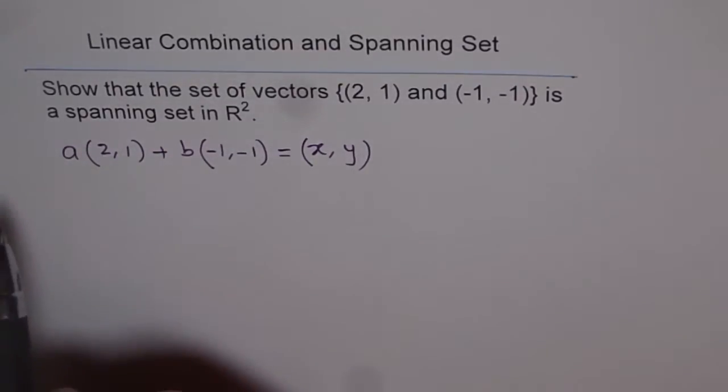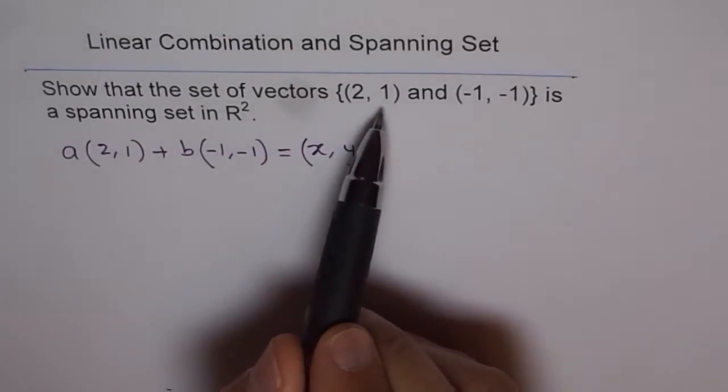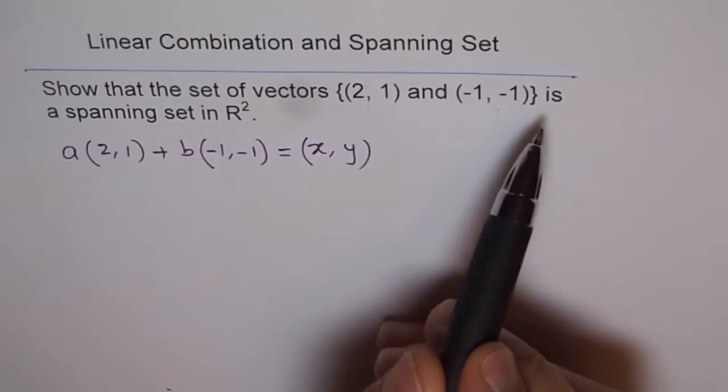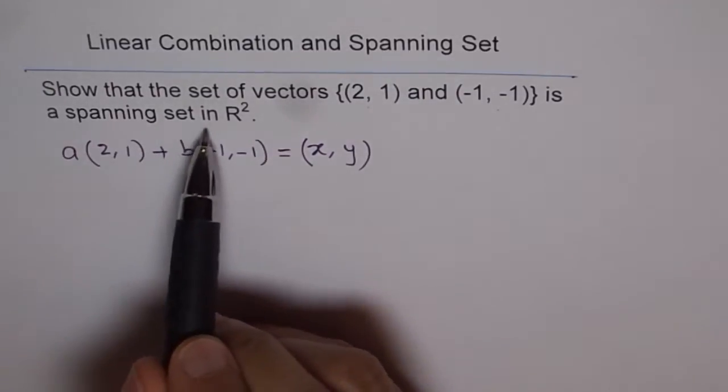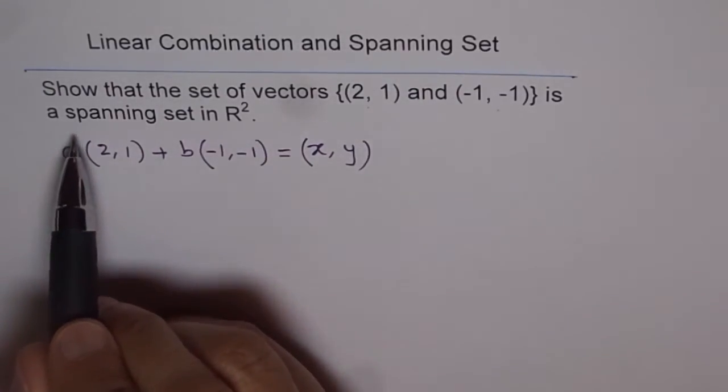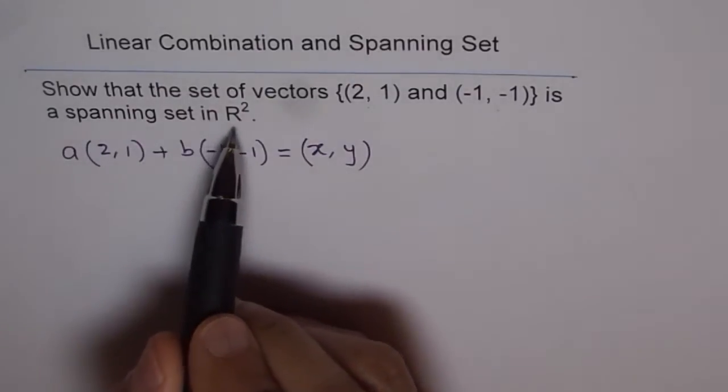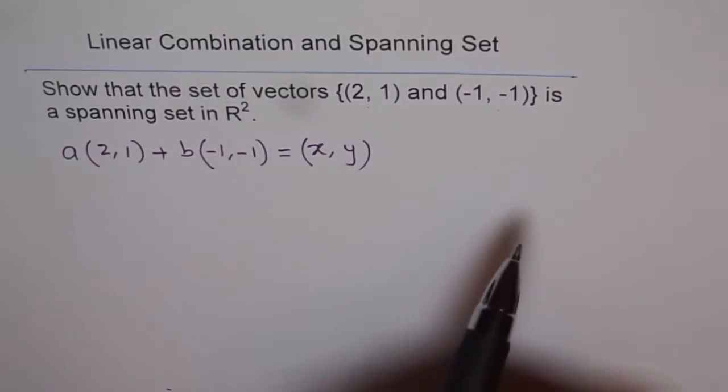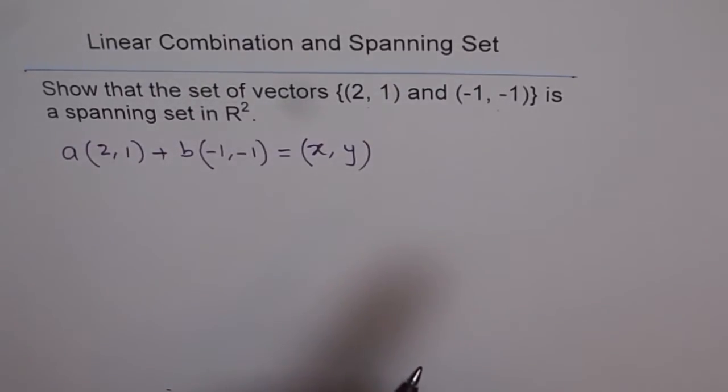Read the problem once again. Show that the set of vectors, these two, (2, 1) and (-1, -1) is a spanning set in R². When we say spanning set in R², it means their linear combination can represent any vector in R².